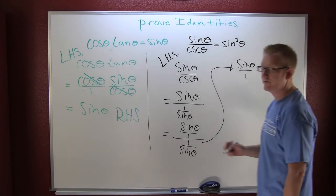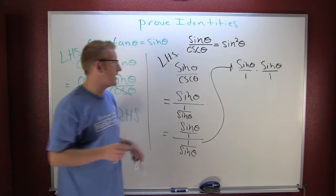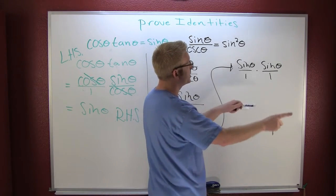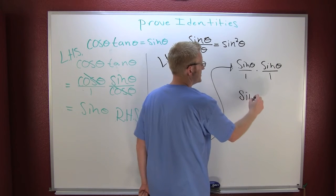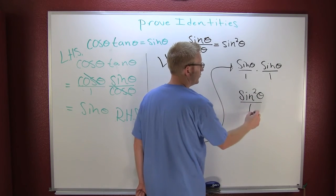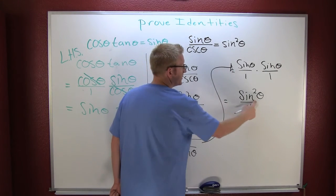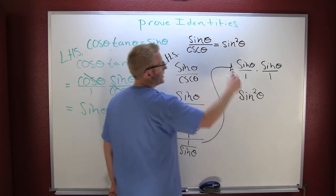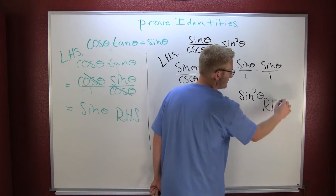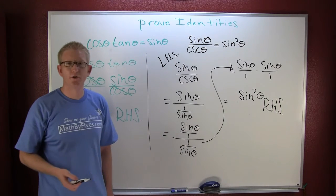Then these fractions multiply just like all the other fractions, straight across. Sine times sine is sine squared theta over one, but you're probably not going to write the over one. And what do you have? The right-hand side, and it has been shown.